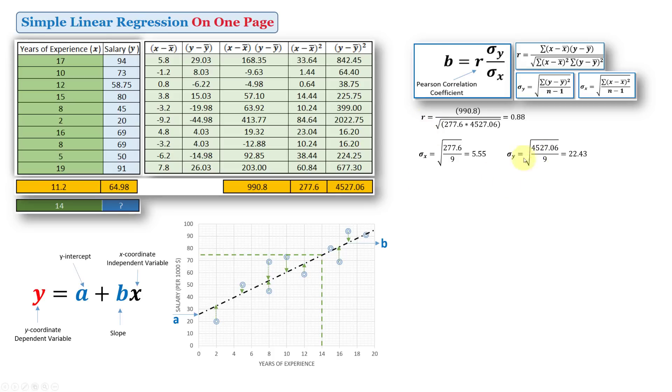Now I have all these three values, I can calculate b. And in this case, b is equal to r, this is the value of r, multiplied by the standard deviation of y divided by the standard deviation of x, is equal to 3.56.